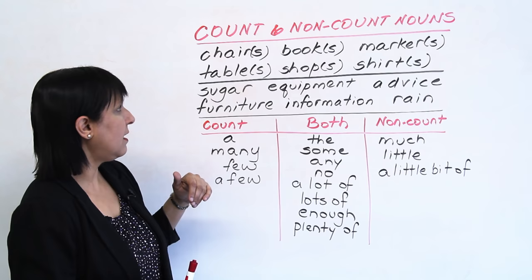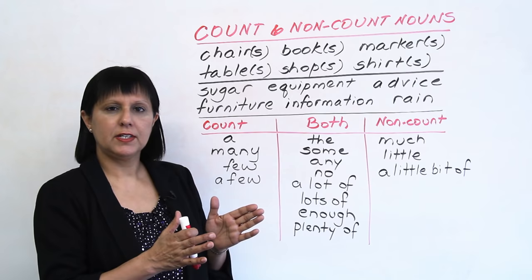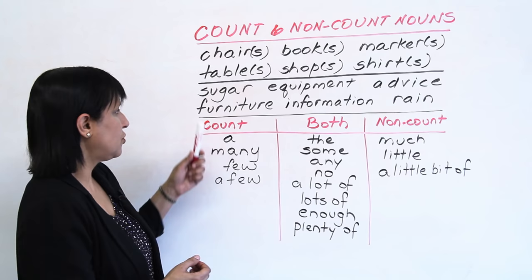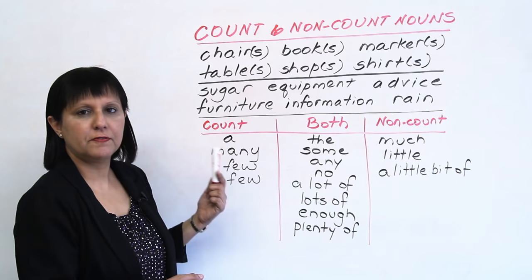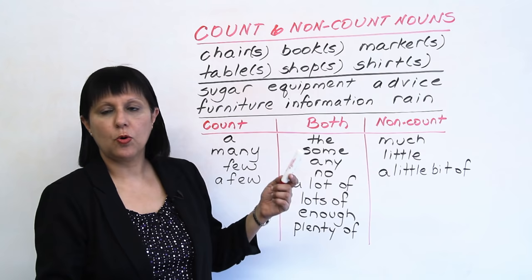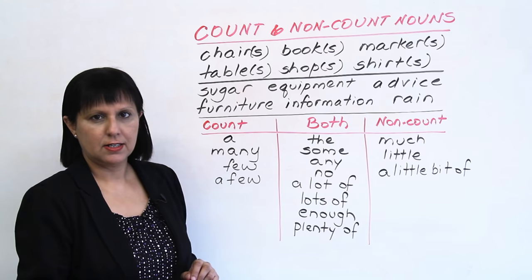The uncountable nouns, or non-count nouns, are ones which only have the singular form — they don't have a separate plural form. So we can't say 'sugars'; we can only say sugar, furniture, equipment, information, advice, or rain. So these are examples of non-count nouns.